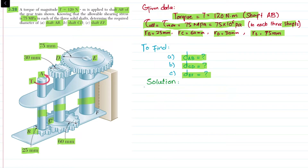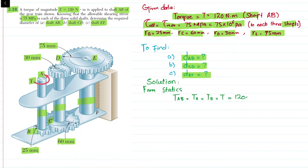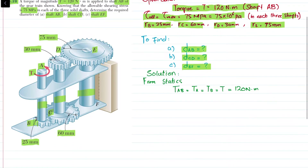From the knowledge of statics, the torque in shaft AB is equal to the torque at A or torque at B, and that is equal to torque T, which is equal to 120 Newton·meter.